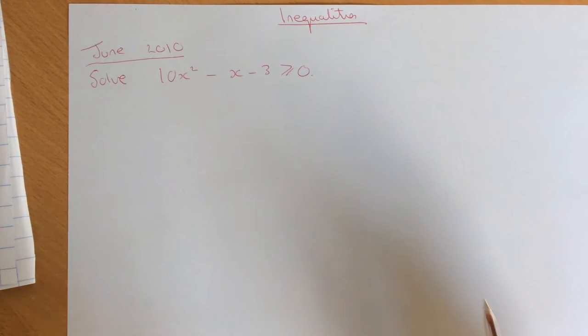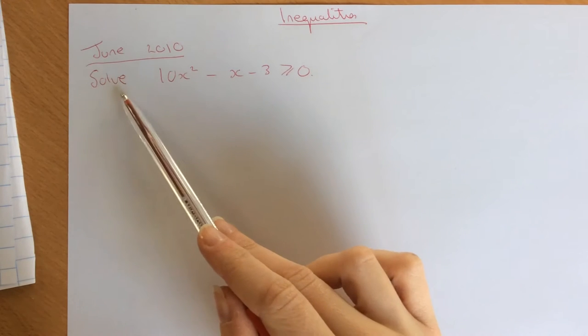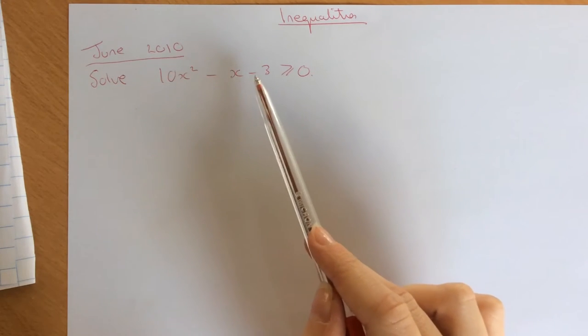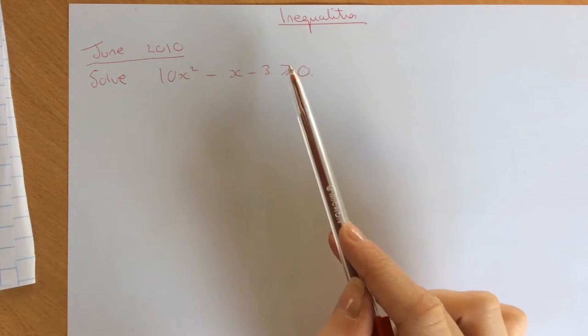Okay, here's an inequalities question, normally the part B of a question, and this is June 2010. It says, solve 10x squared minus x minus 3 as greater than or equal to 0.